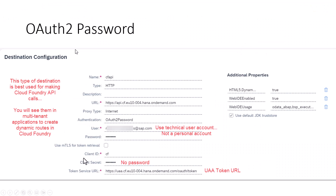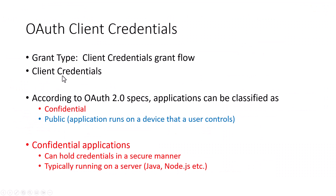Going back to the next one — in this video, we will look at the OAuth client credentials authentication flow. This uses the client credentials grant flow, and what you do is you supply the client credentials. According to the OAuth 2.0 specs, applications can be broadly classified as confidential and public applications — confidential client or public client.